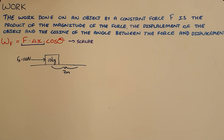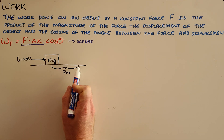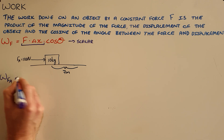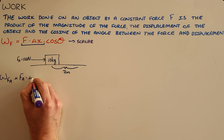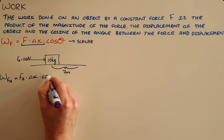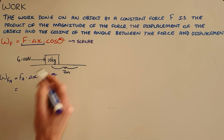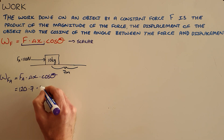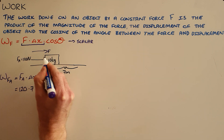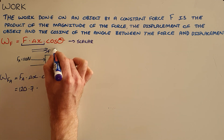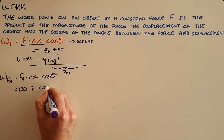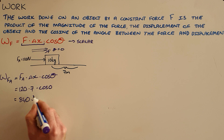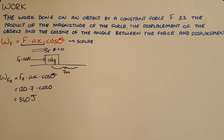We can demonstrate this with an example of an applied force pushing a box seven meters across a horizontal surface. The work done by the applied force equals the applied force times displacement times the cosine of the angle between them. The applied force is 120 newtons, displacement is seven meters, and since both the force and displacement are to the right, the angle between them is zero. Cosine of zero is one, so 840 joules of work has been done by the applied force.